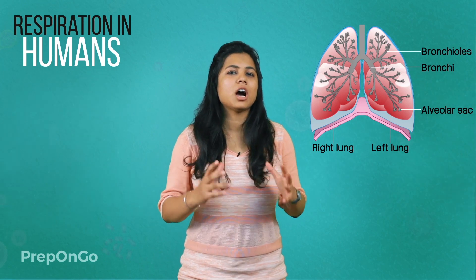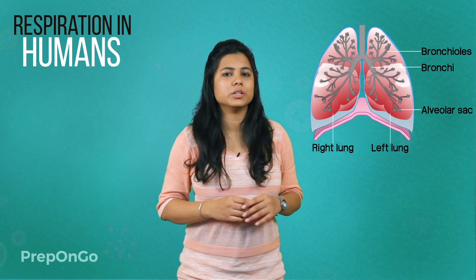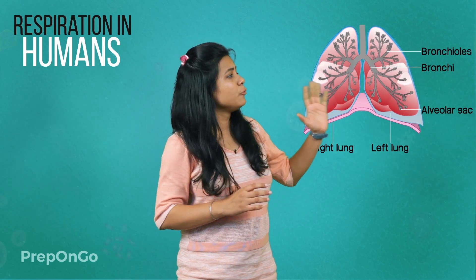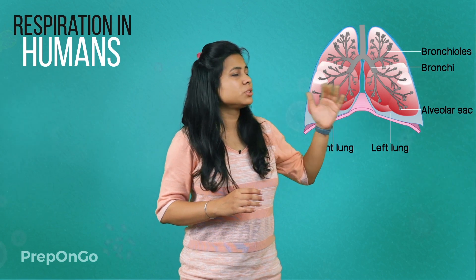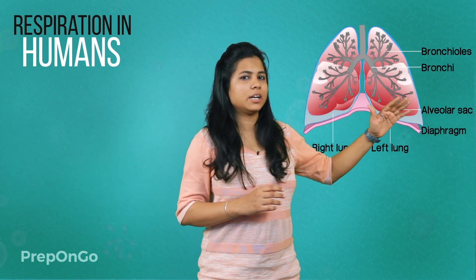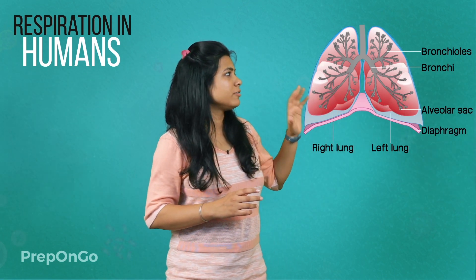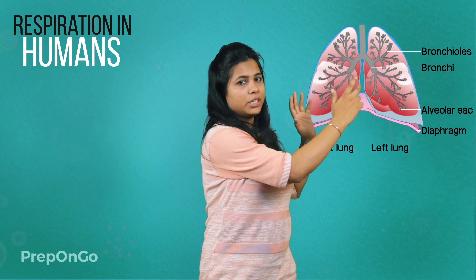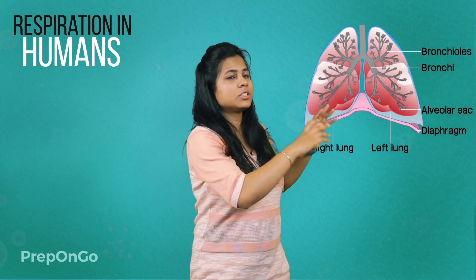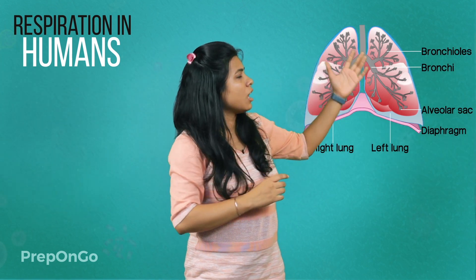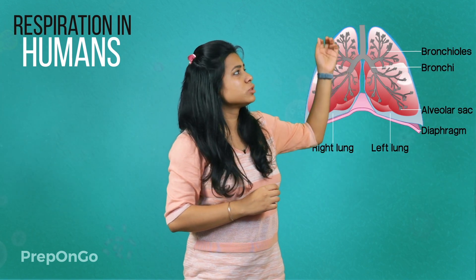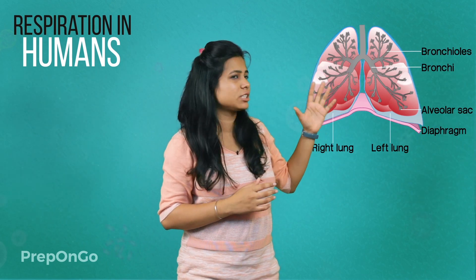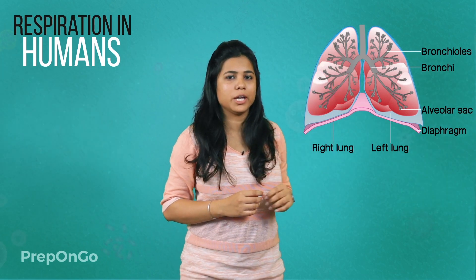Now let's see how this process works. When we breathe in, we lift our ribs, which flattens our diaphragm. This increases the chest cavity, which in turn allows the lungs to draw air in, which reaches the expanded alveoli.